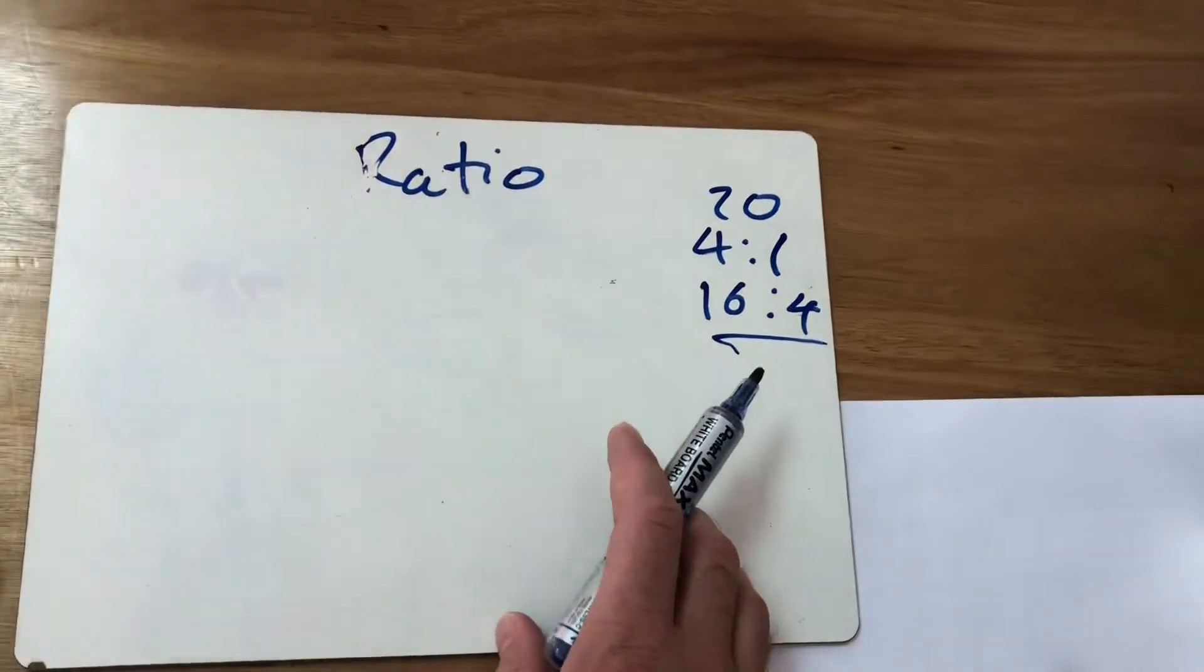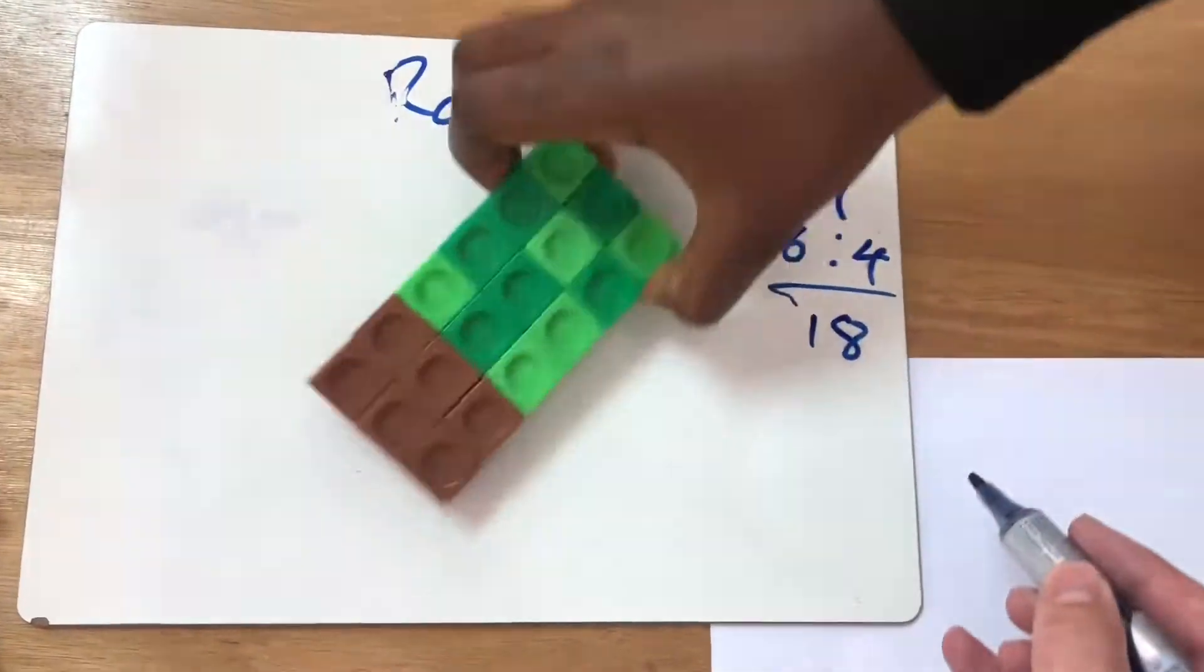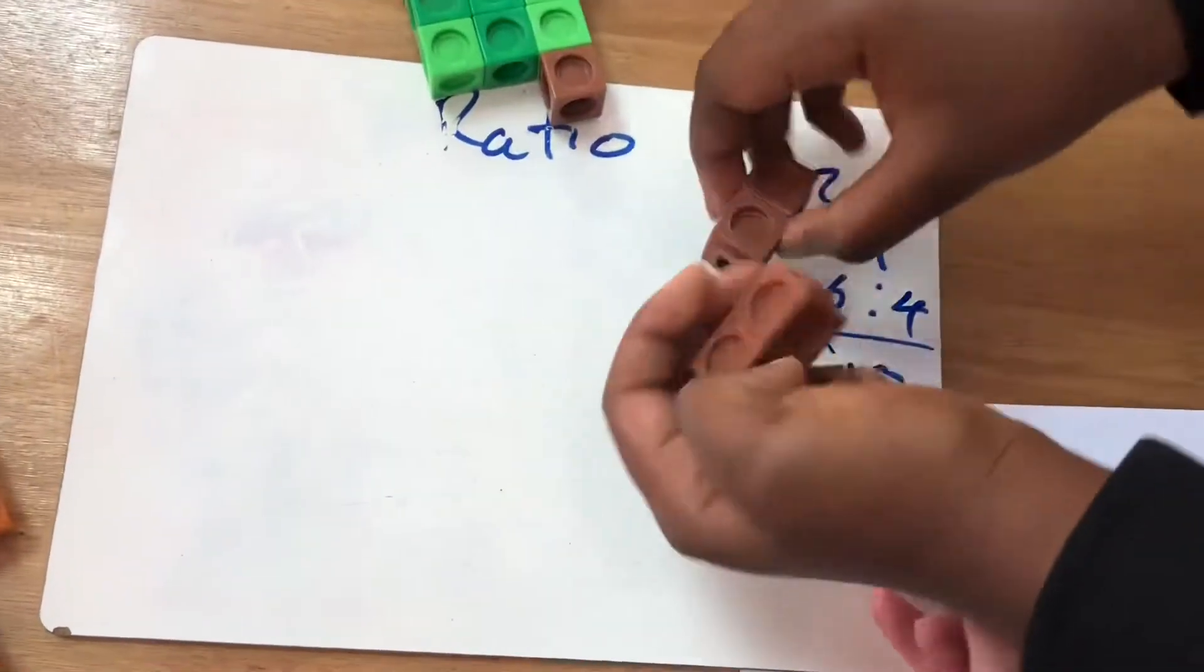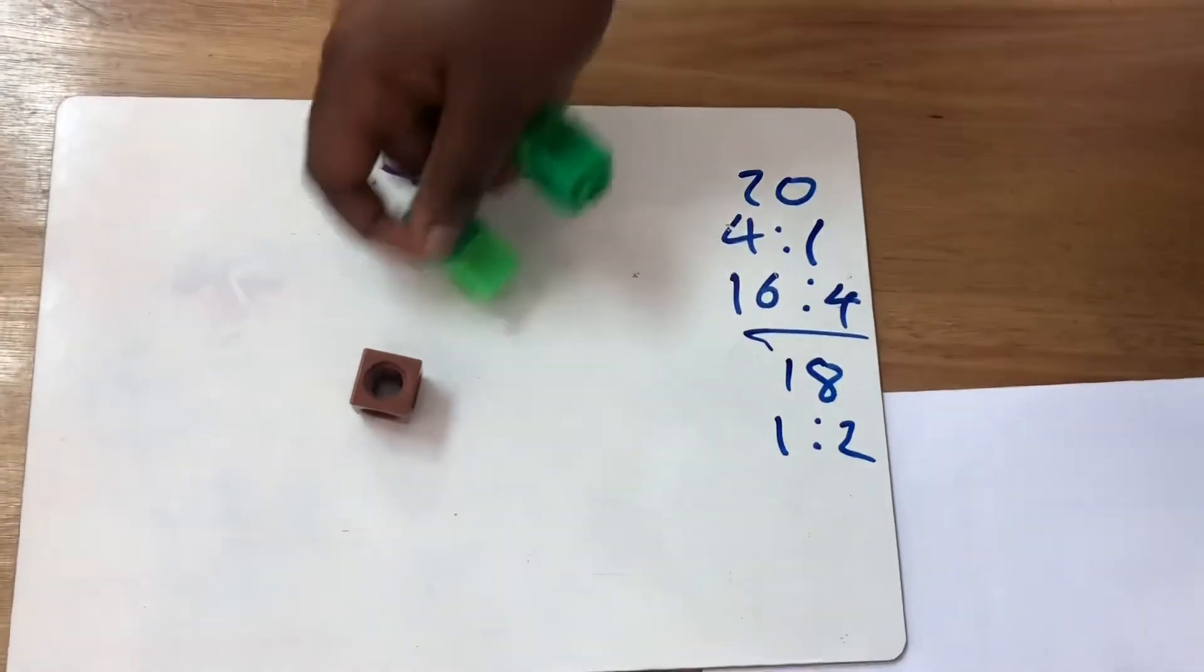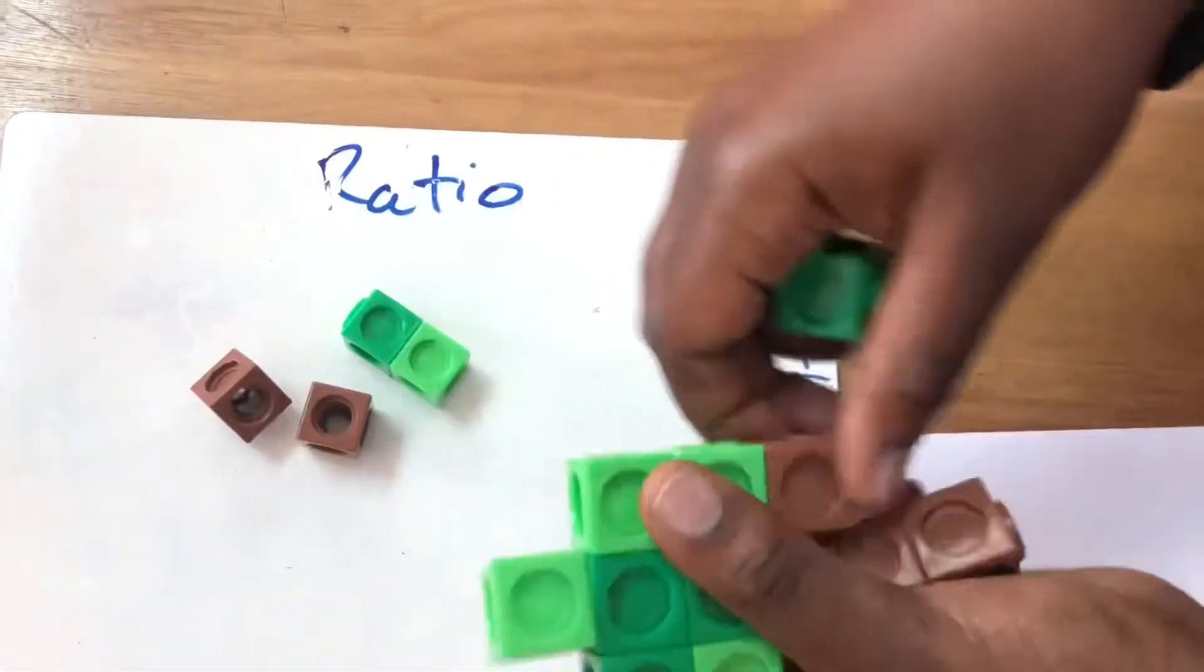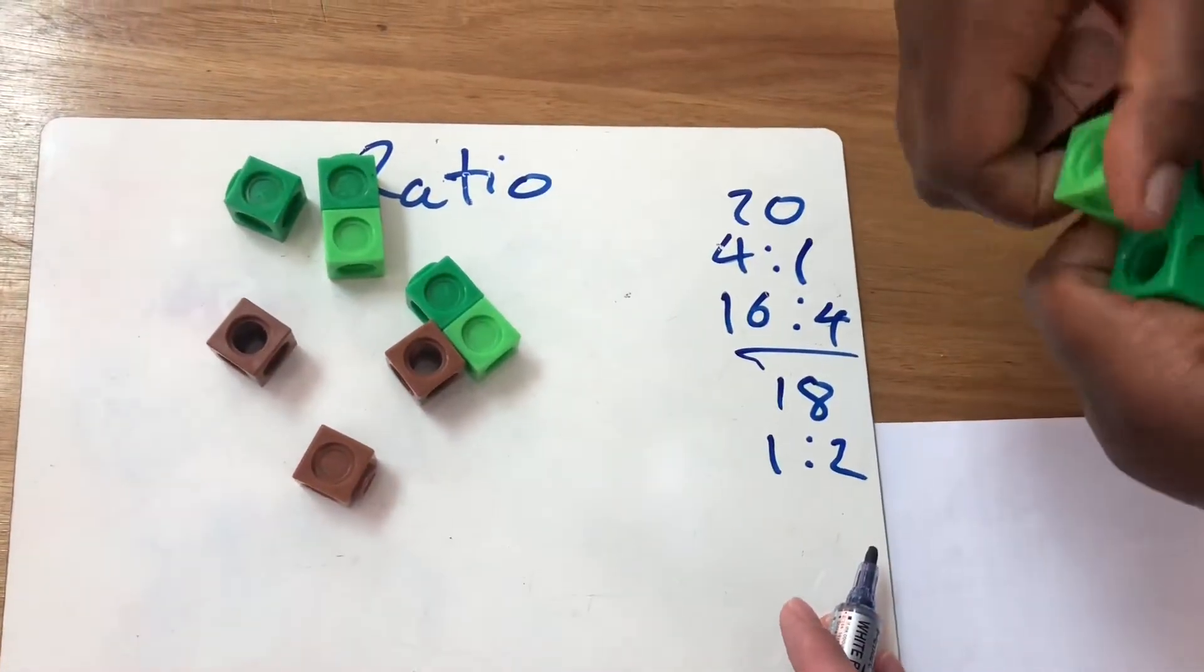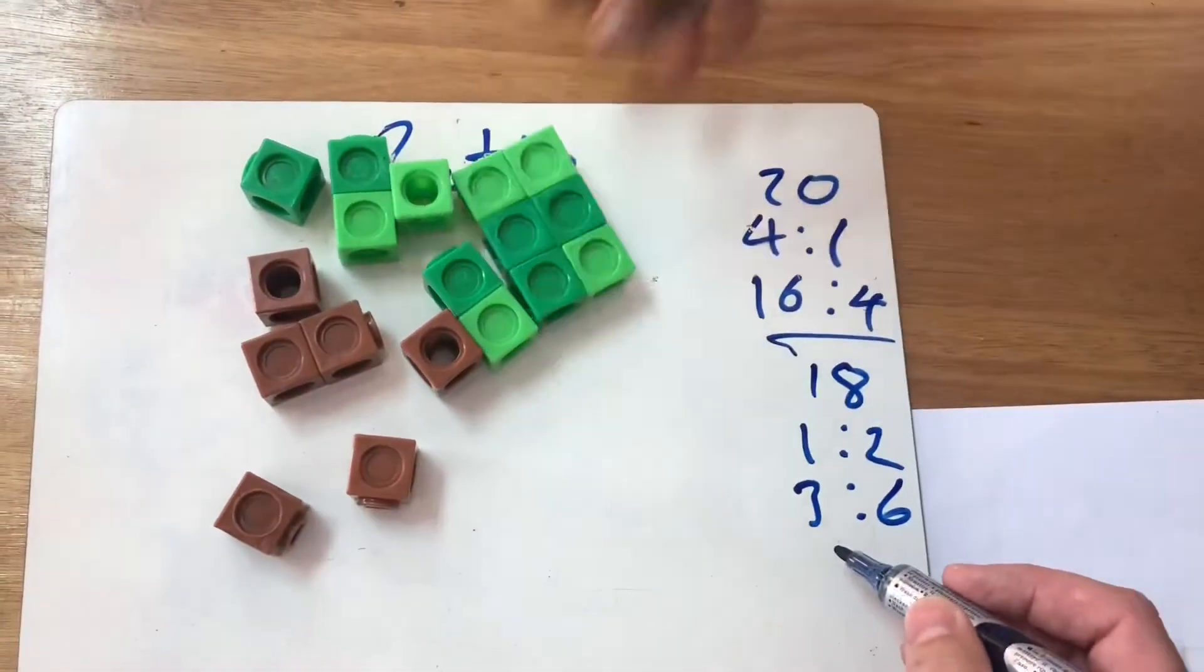Let's see our next guest presenter. So we have 18 blocks and the 18 blocks can be split up into 1 to 2. So each one block will have two blocks and then that can be split up as 3, 3 to 6 which can be broken up more into 6 to 12.